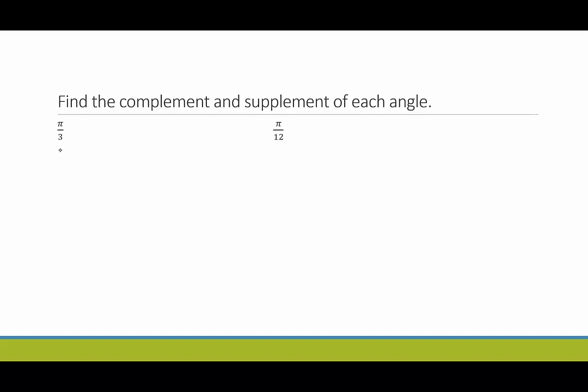Okay, so to find the complement, remember this angle plus something else, plus question mark, has to equal pi over 2. So what we're looking at is pi over 3 plus x is equal to pi over 2. To get x by itself, we're going to subtract pi over 3 from both sides. We have two fractions. What do we need if we want to subtract fractions? We need a common denominator.